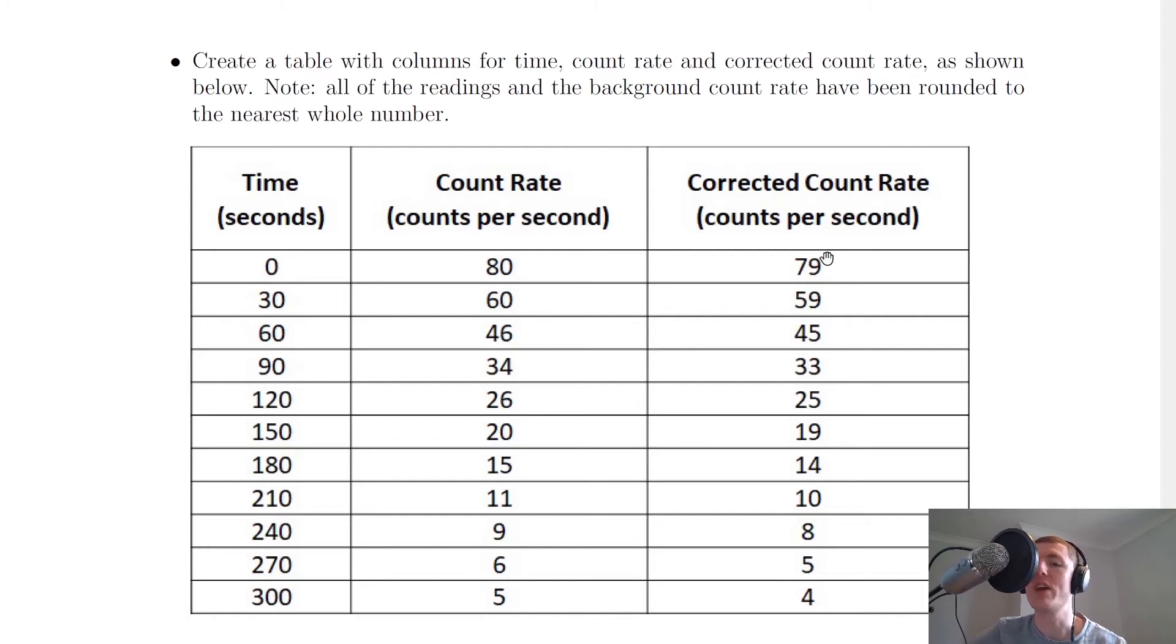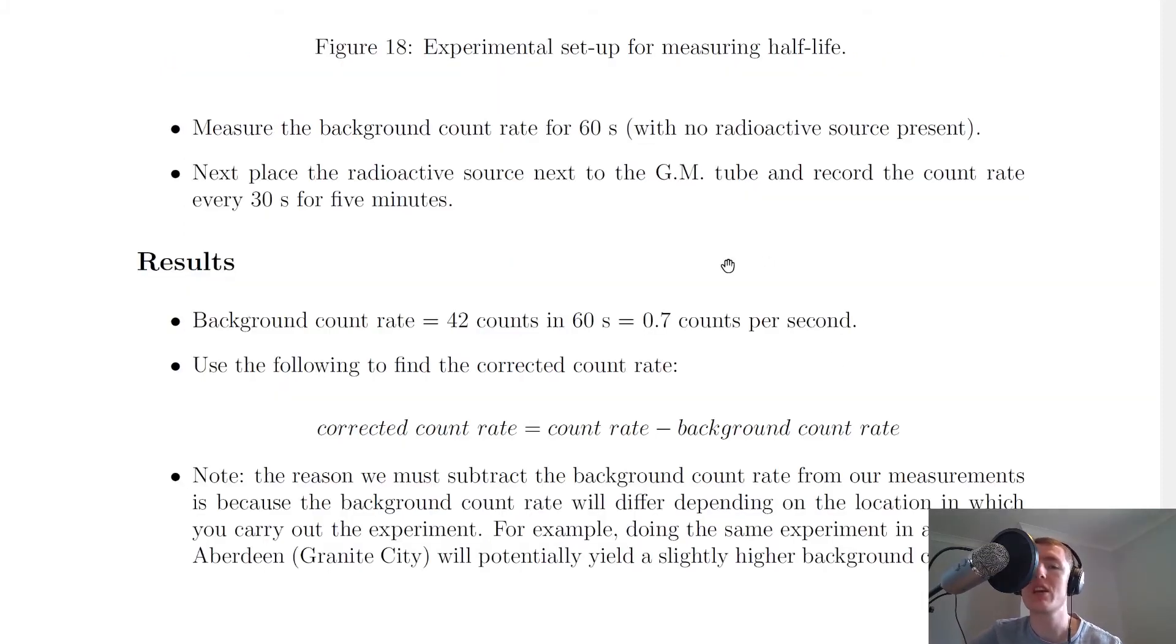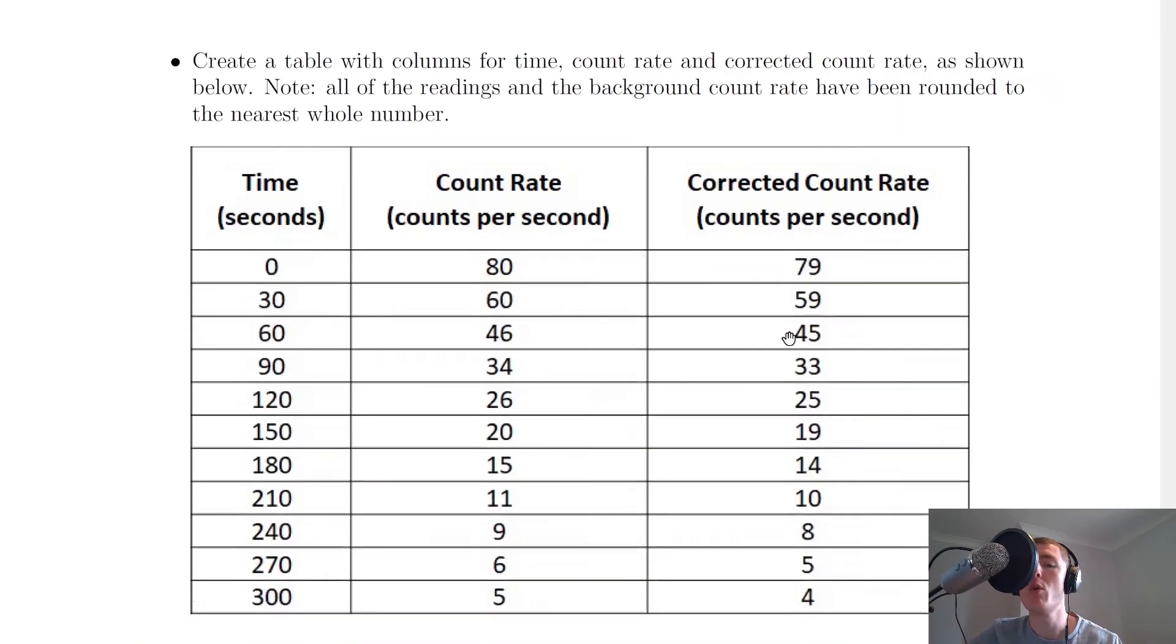You'll notice that the corrected count rate as well is just one value less than our count rate. The reason for that is we have taken our background count rate of 0.7 counts per second and we've rounded it up to the nearest whole number. So we've rounded that to one count per second. So all we've done there is we've subtracted our one count per second to get our corrected count rate in this column.